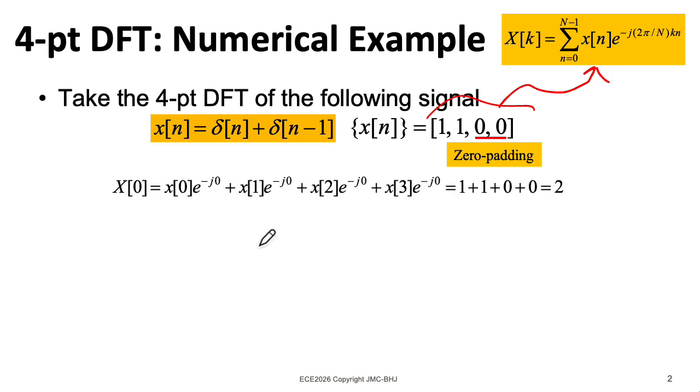For big X zero, this is particularly easy, because when you plug in zero for k here, e to the zero is just one. So big X zero is just the sum of the sequence. So that's two.